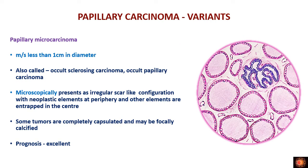Now we move to variants of papillary carcinoma. Papillary microcarcinoma: when the tumor size is less than one centimeter, it is called papillary microcarcinoma, also known as occult sclerosing carcinoma or occult papillary carcinoma. Microscopically, the tumor is either circumscribed or has a scar-like configuration at the periphery with tumor cells showing typical nuclear features of papillary carcinoma. It is considered a precursor for conventional PTC and has an excellent prognosis.